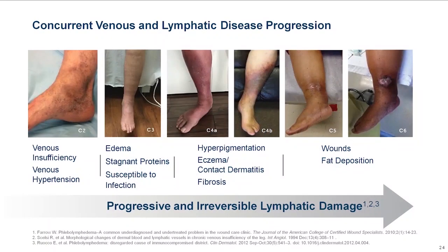This slide demonstrates that venous and lymphatic disease are intimately associated as venous disease becomes more progressive. Physicians recognize C2 disease as typical varicose veins. In C3, we recognize the onset of edema. In C4, we recognize skin changes and subsequent fibrosis. In C5, a healed ulceration. And C6 is a current active venous leg ulceration. The importance of recognizing flebolymphedema within C3 to C6 patients allows improved outcomes when appropriate lymphedema treatment is performed.